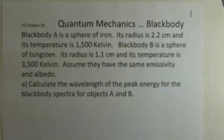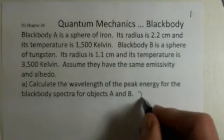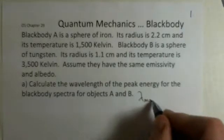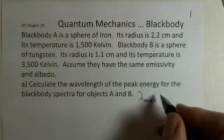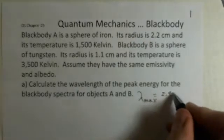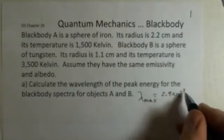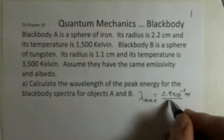We want to first find the wavelength of the peak energy for each of these blackbody spectra. Well, we know we can use Wien's law to accomplish this. The wavelength of the peak on the curve of energy versus wavelength occurs at 2.9 times 10^-3 meters.